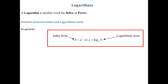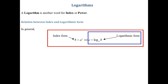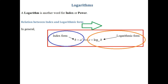In general, there is a relation between an equation in index form and an equation in logarithmic form. If you have the equation in index form b equals a to the power c, you can rewrite that in logarithmic form as c is equal to log of b to the base of a. I'm going to show you how to use that relation to convert equations from index to logarithmic and from logarithmic back into index form.